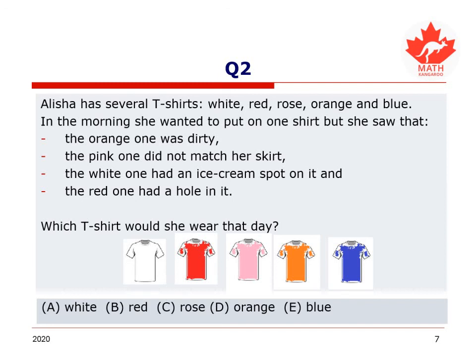Let's try another question. Alicia has several t-shirts: white, red, rose, orange, and blue. In the morning she wanted to put on one shirt, but she saw the following: the orange one was dirty, the pink one did not match her skirt, the white one had an ice cream spot on it, and the red one had a hole in it. Presumably she would not want to wear these shirts. Which t-shirt would she wear? Take a second, pause the video, read through the statements again, figure it out, and come back.